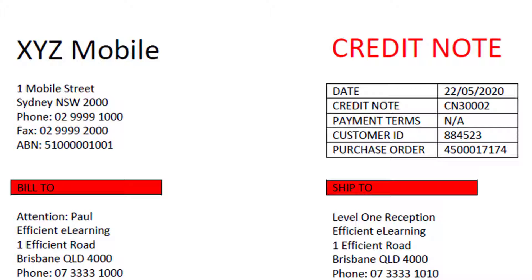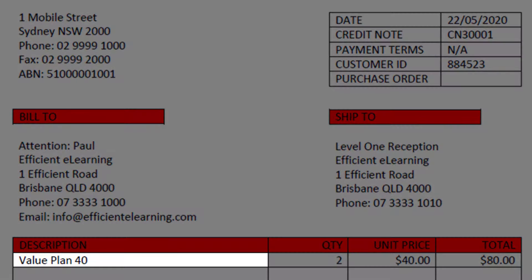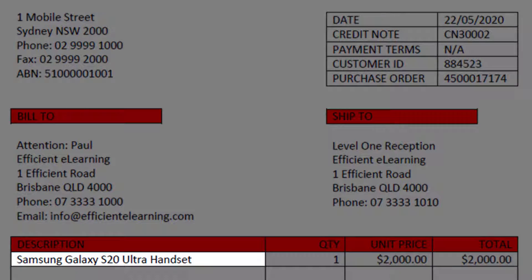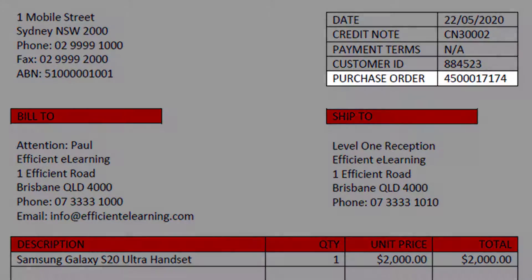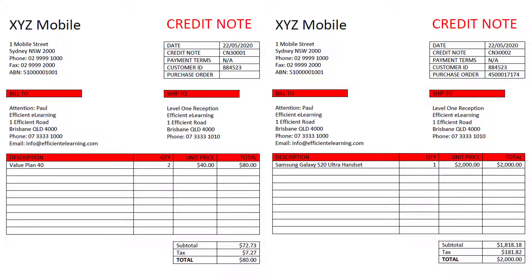So why do some credit memos reference a purchase order and others don't? Some organizations have a strict policy that all invoices and credit notes must reference a purchase order or they cannot be processed. But typically most organizations require the majority of invoices and credit notes to reference a purchase order, with some limited exceptions. In this fictitious company example, invoices and credit notes for mobile phone plan costs are a permitted exception — they don't require a purchase order. However, the purchase of mobile phone handsets still requires a purchase order. In this video, the focus is on posting a non-PO credit memo.